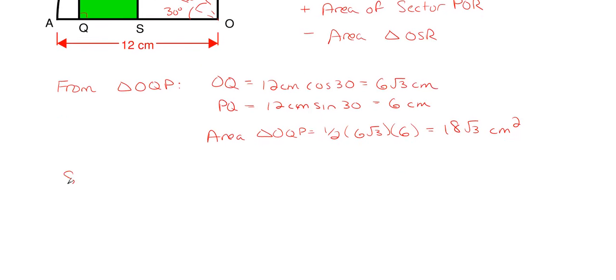So my sector POR area will just be that 30 degrees over the total of a circle which is 360 so that gives us our portion there, our sector, and that'd be just our pi times my radius squared.